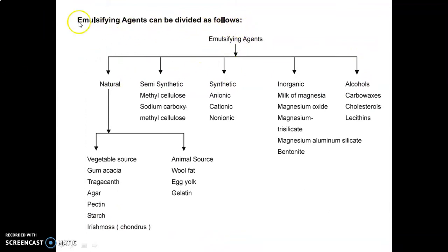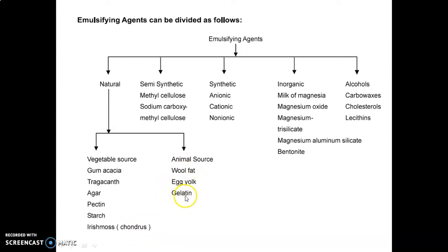Emulsifying agents can be divided as follows: natural, semi-synthetic, synthetic, inorganic, and alcohols. Natural agents include vegetable sources — gum acacia, tragacanth, agar, pectin, starch, and Irish moss (carrageen) — and animal sources — wool fat, egg yolk, and gelatin. Semi-synthetic agents include methyl cellulose and sodium carboxymethyl cellulose (sodium CMC). Synthetic agents include anionic (negative charge), cationic (positive charge), and non-ionic (chargeless). Inorganic agents include milk of magnesia, magnesium oxide, magnesium trisilicate, magnesium aluminium silicate, and bentonite. Alcohols include carbowaxes and cholesterol lecithins.